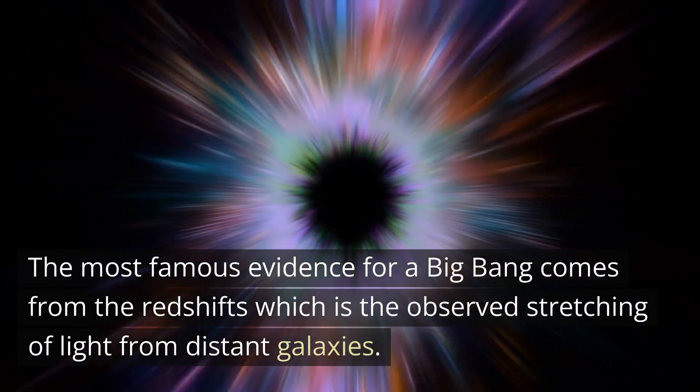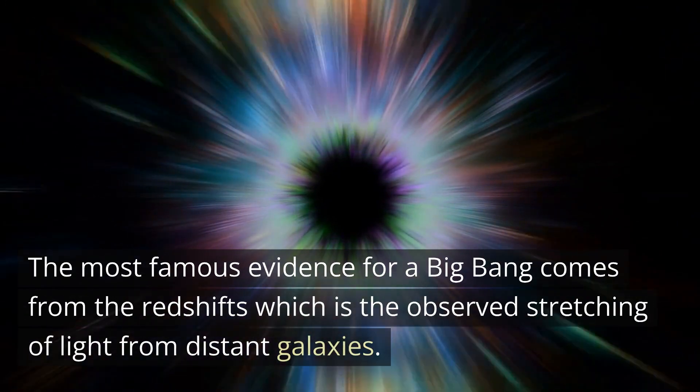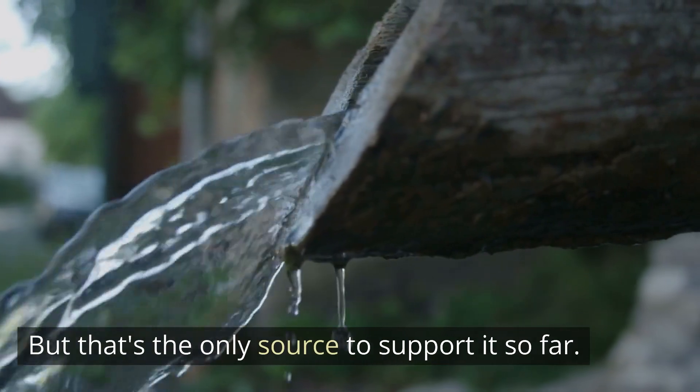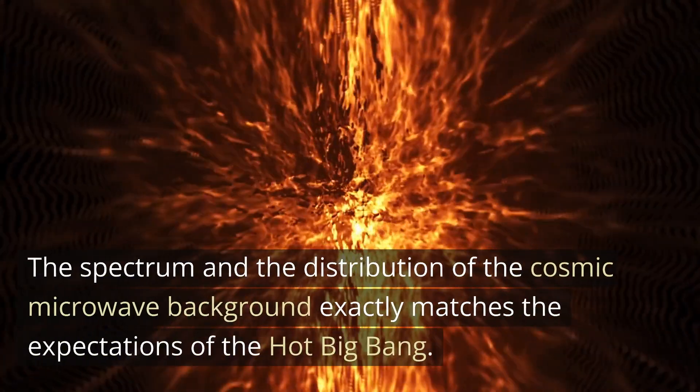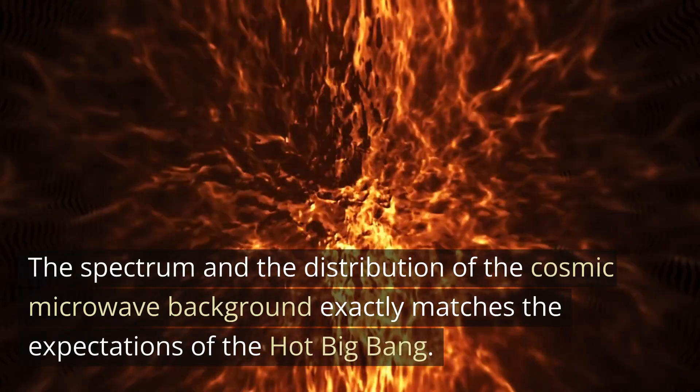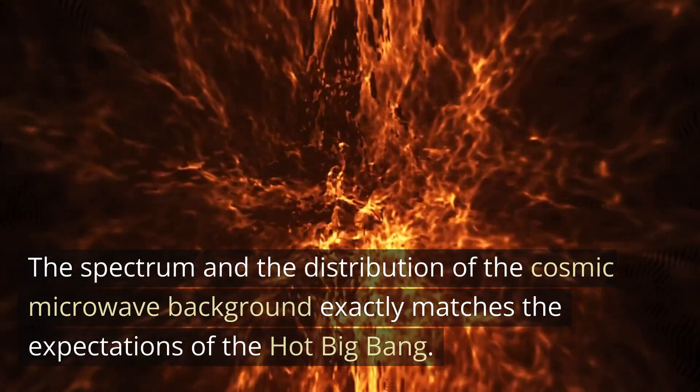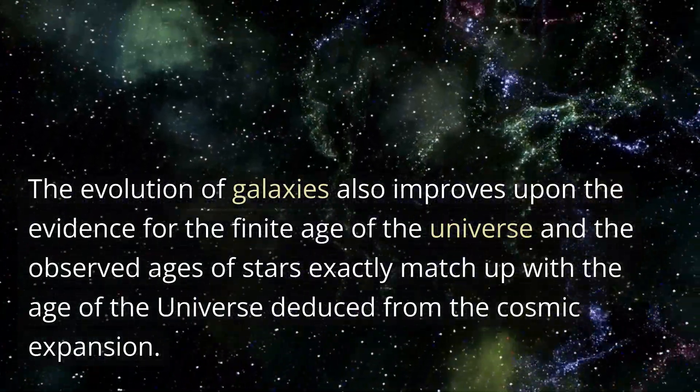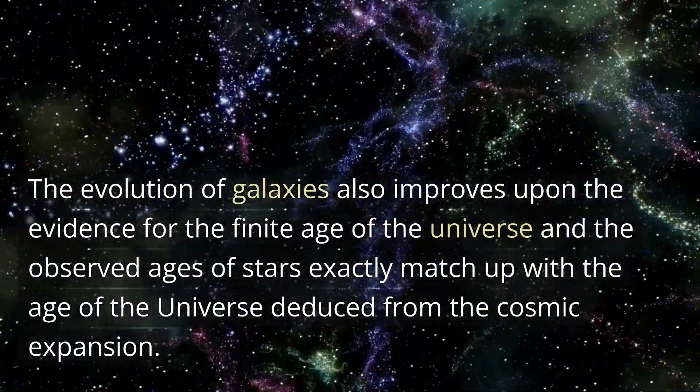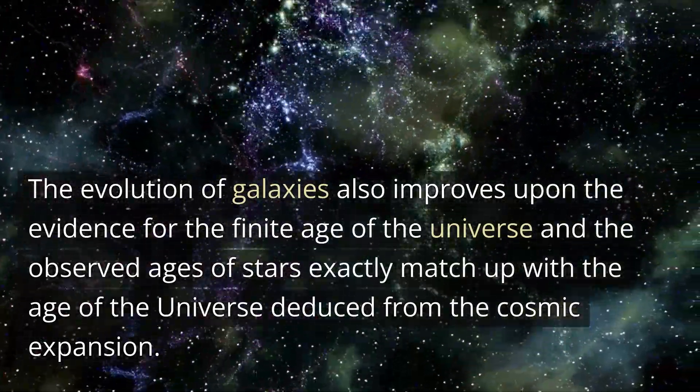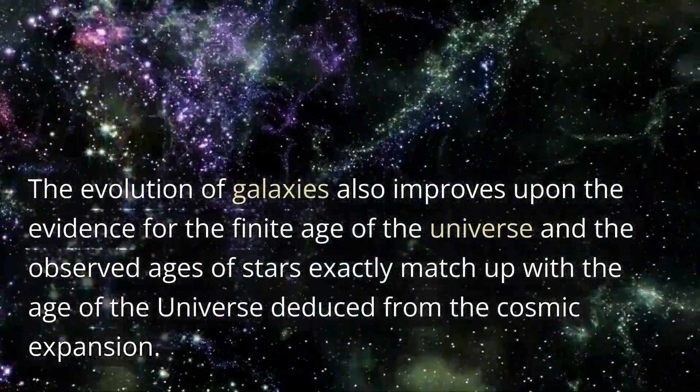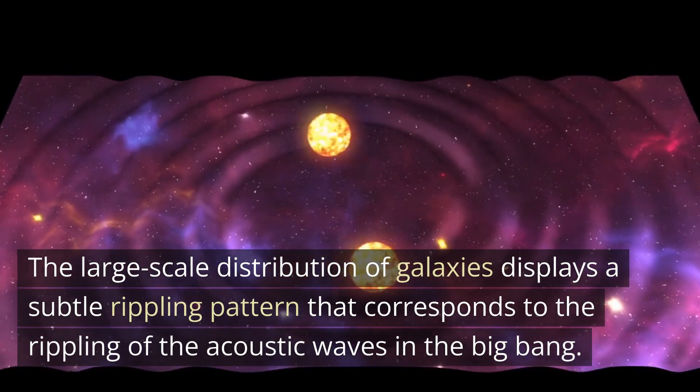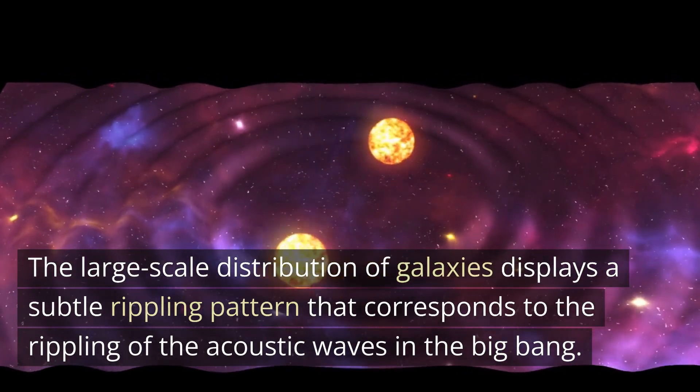The most famous evidence for the Big Bang comes from the redshifts, which is the observed stretching of light from distant galaxies. The spectrum and distribution of the cosmic microwave background exactly matches the expectations of the hot Big Bang. The evolution of galaxies also improves upon the evidence for the finite age of the universe, and the observed ages of stars match up with the age of the universe deduced from cosmic expansion. The large-scale distribution of galaxies displays a subtle rippling pattern that corresponds to the rippling of acoustic waves in the Big Bang.